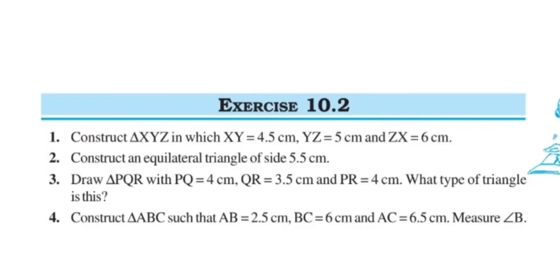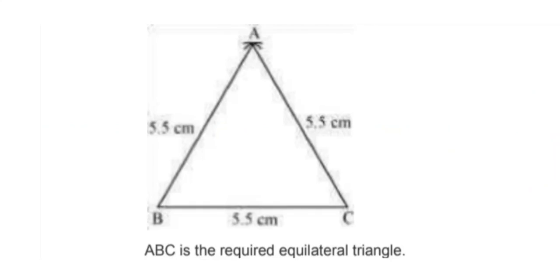Now see Question 2: Construct an equilateral triangle of side 5.5 centimeters. See the steps: first draw a line segment BC of length 5.5 centimeters. Taking point B as center, draw an arc of 5.5 centimeter radius. Taking point C as center, draw an arc of 5.5 centimeter radius to meet the previous arc at point A. Now join A to B and A to C. So ABC is the required equilateral triangle.